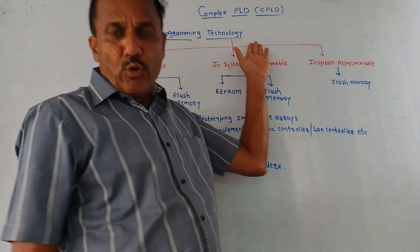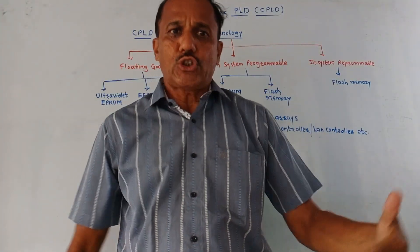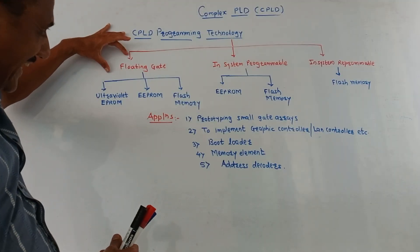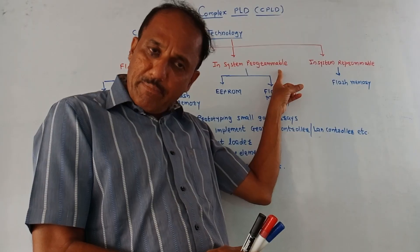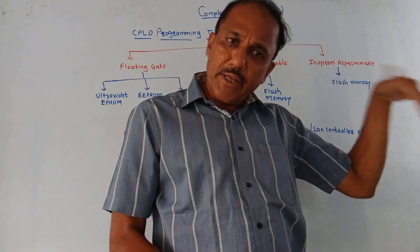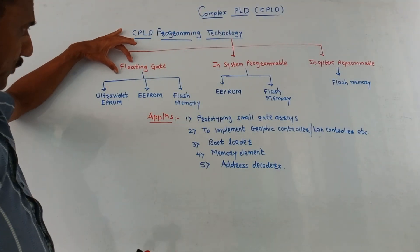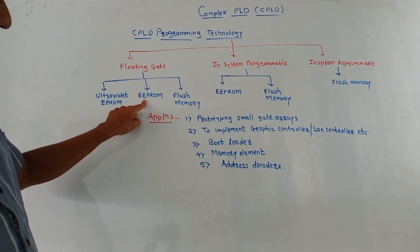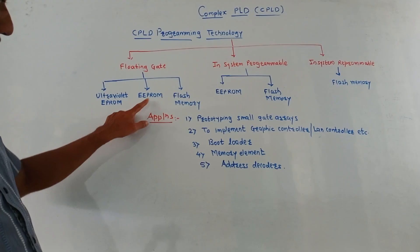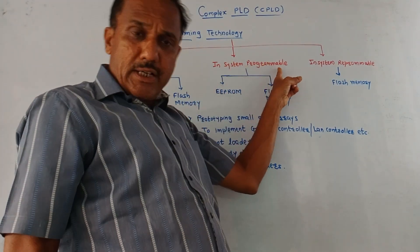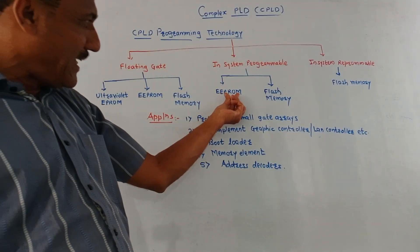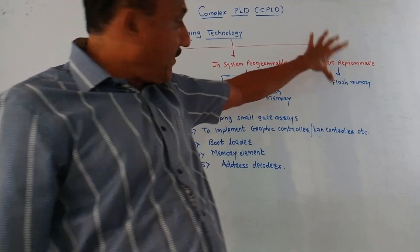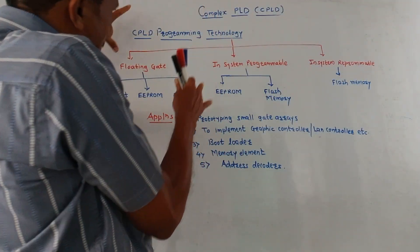The next part is CPLD programming technologies — what are the different technologies used to perform programming using CPLD. Three major categories: one is floating gate technology, second is in-system programmable technology, and third is in-system reprogrammable technology. Floating gate technology has three subcategories: ultraviolet EPROM, EEPROM (electrically erasable PROM), and flash memory. In-system programmable technology uses EEPROM and flash memory. In-system reprogrammable technology makes use of flash memory technology.